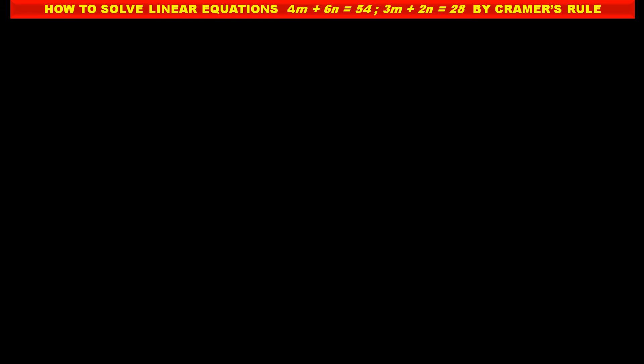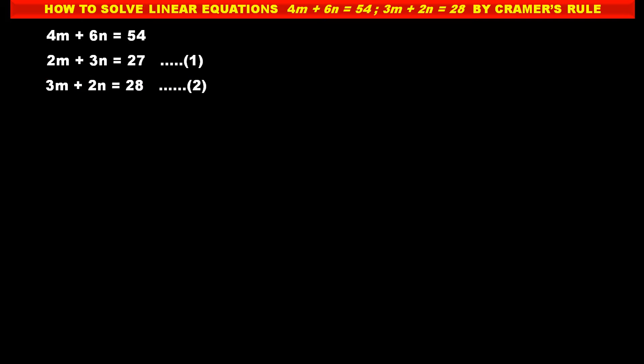Friends, two linear equations are given and we have to solve them by Cramer's rule. The first equation is 4m + 6n = 54, but in this first equation there is a common factor 2. So, dividing both sides by 2, we get 2m + 3n = 27. We consider this as equation number 1. The second given equation is 3m + 2n = 28. This is equation number 2.